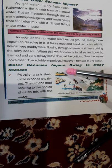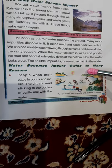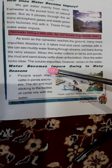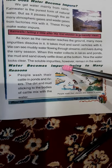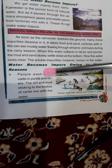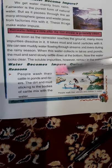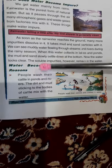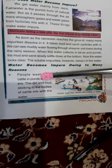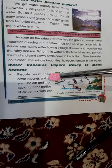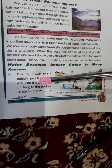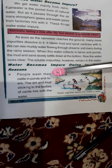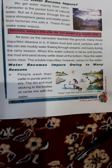Water becomes impure owing to many reasons. Human activities: people wash their cattle in ponds and rivers, and the dirt and mud sticking to the bodies of cattle mix with the water.